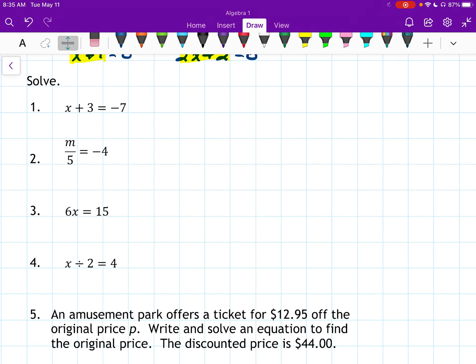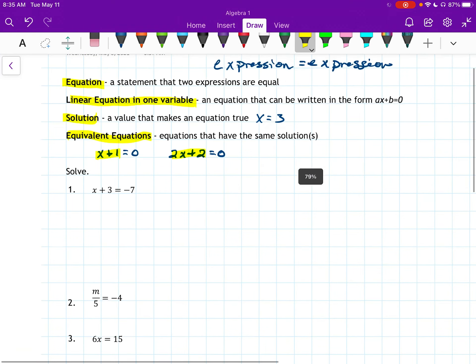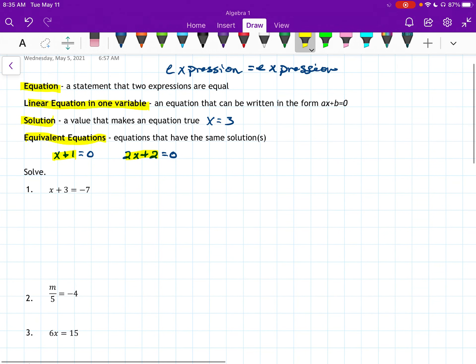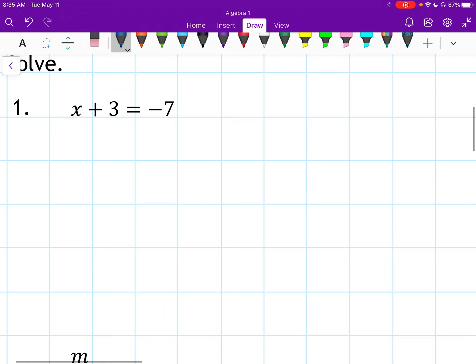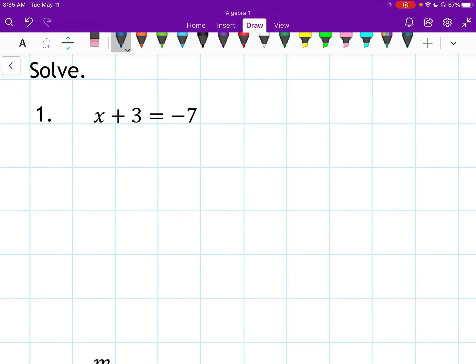Now we go into solving. These are all equations because they have an equal sign in them. They are a linear equation in one variable. Linear, meaning nothing is squared. We all know what like x squared. That's not a linear equation. We just have a plain old x here. And it has one variable, meaning that only the x is listed. There's not like an x and an m or an x and a y. Just the x. So solving this, we have x plus 3 is negative 7. So we're going to subtract 3 from both sides, and we'll have x equals negative 10.